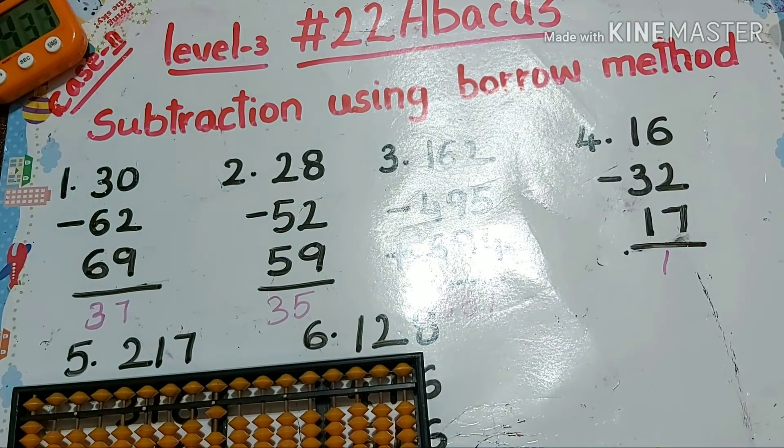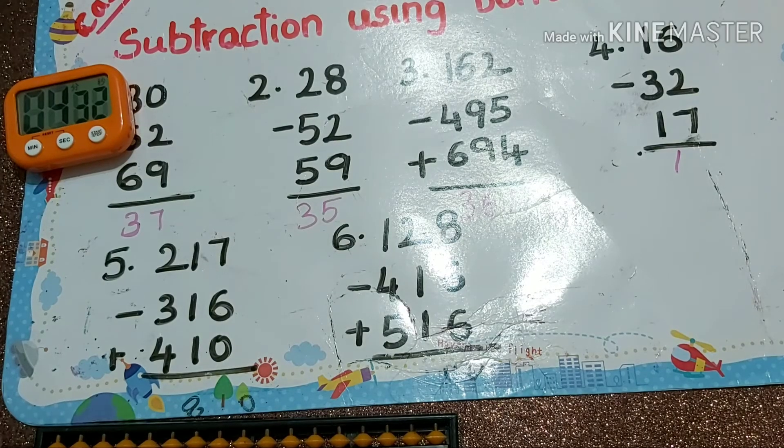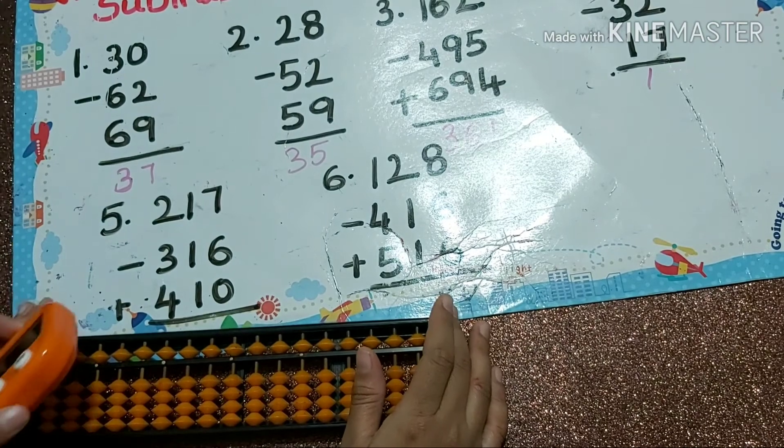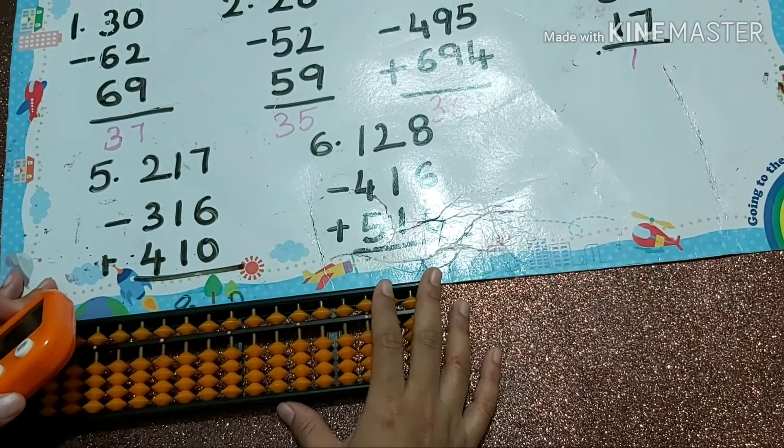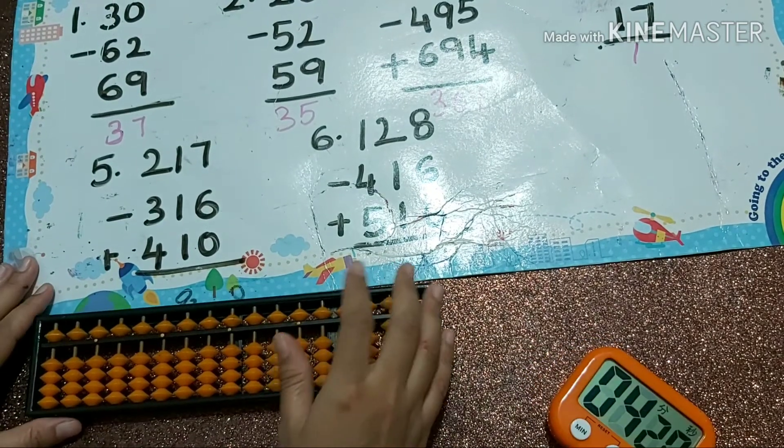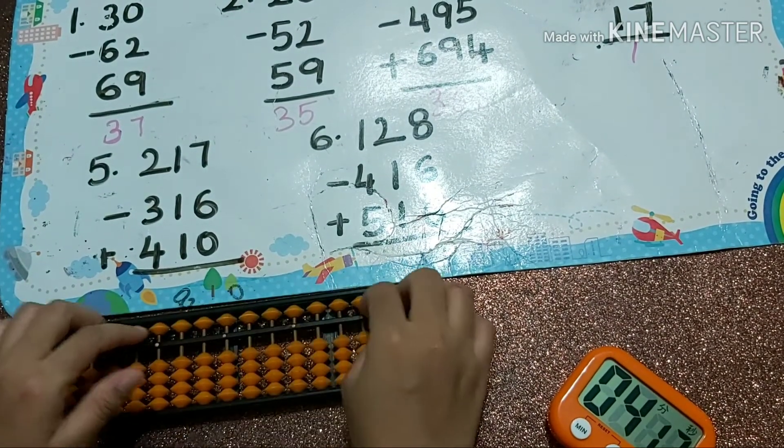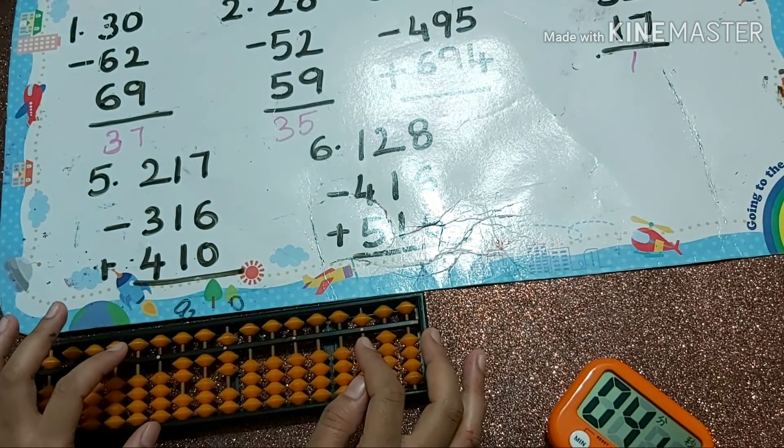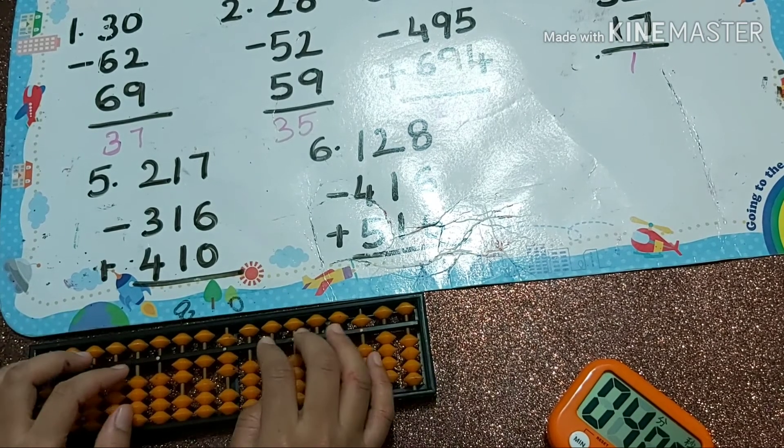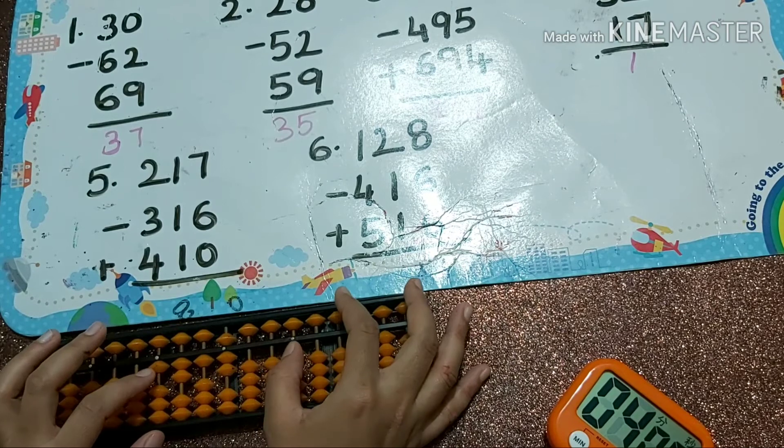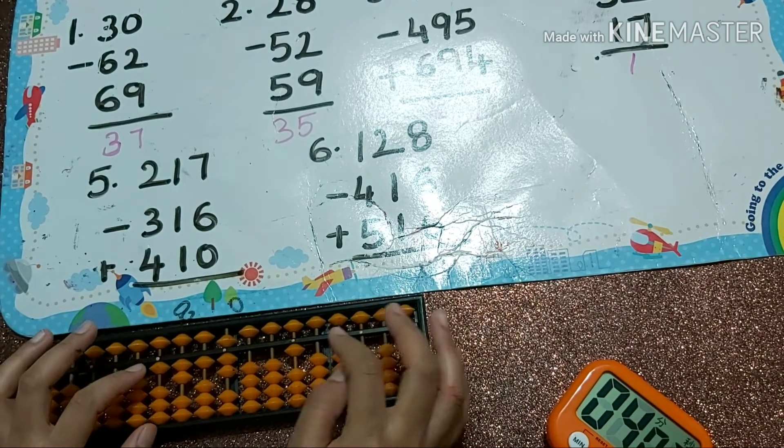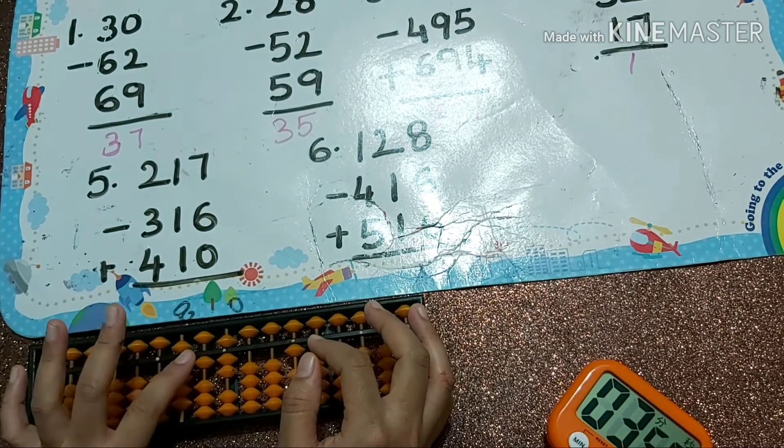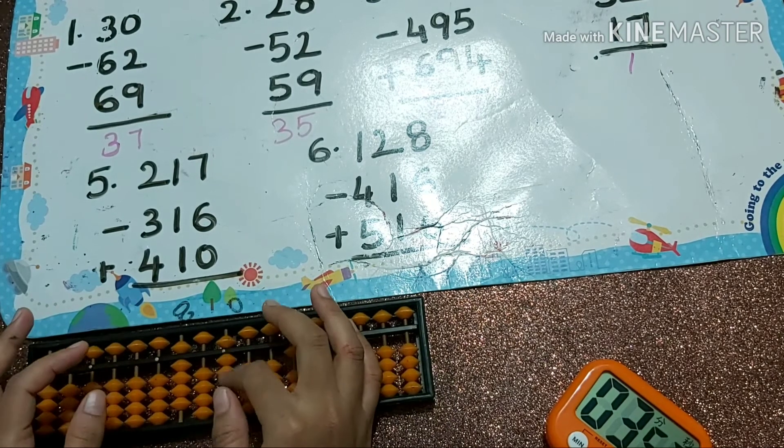Next one: 217 minus 316. Minus three: how to get minus three? I must take borrow. Minus three: minus ten plus seven, you can do directly. Next you must do minus one, can do directly. Next minus six also can do directly.